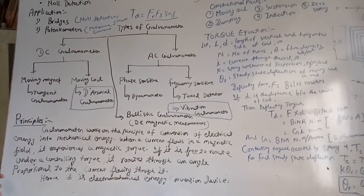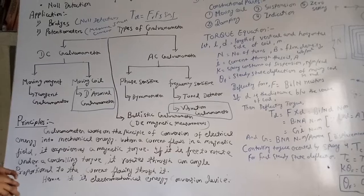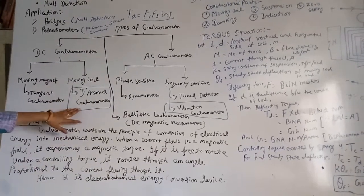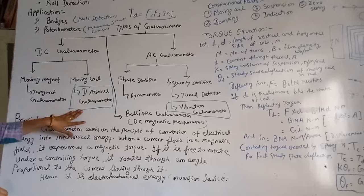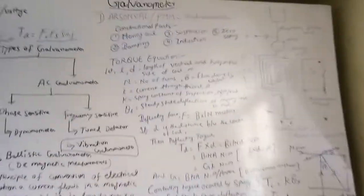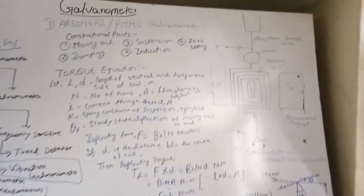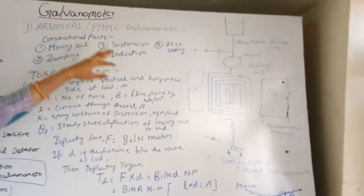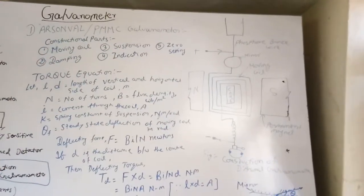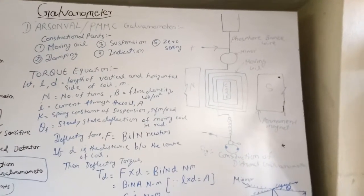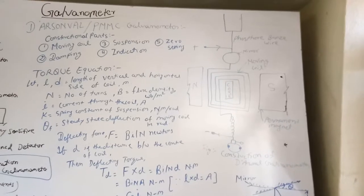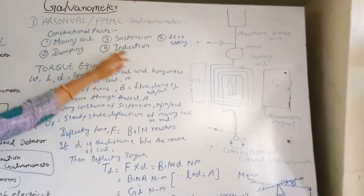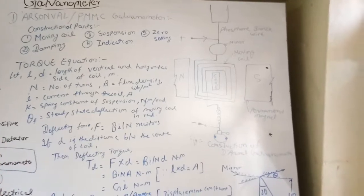Now we will deal with the types of galvanometer one by one. The first one is the D'Arsonval galvanometer, also known as PMMC galvanometer — that is, Permanent Magnet Moving Coil galvanometer. Its name specifies its principle. Now come to the construction of the galvanometer.